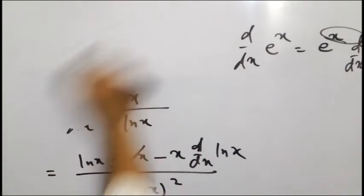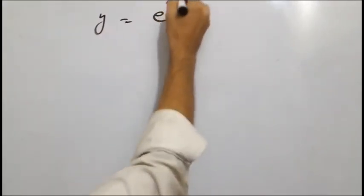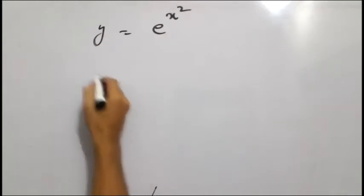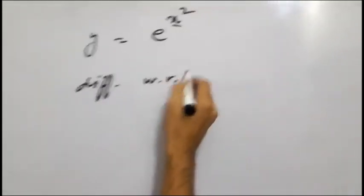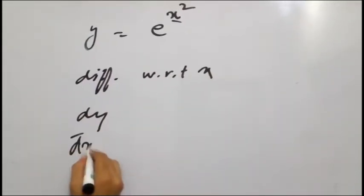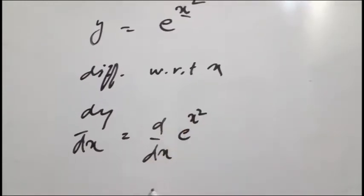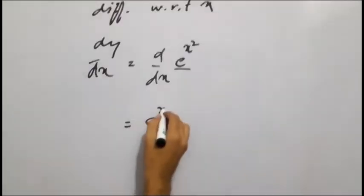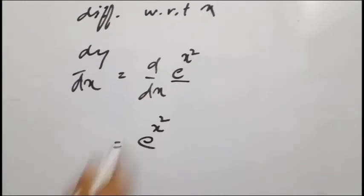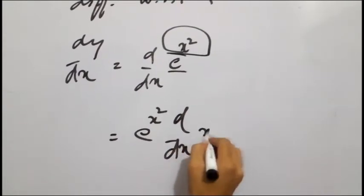हमारे पास पहला सवाल है: y is equal to e raised to power x square। इसका differentiation with respect to x करेंगे — dy over dx is equal to d over dx into e raised to power x square। exponential function का derivative वैसे ही आता है, तो e raised to power x square वैसे ही आ गया। अब exponential function को छोड़ देना है, जो इसकी power होगी — d over dx into x square — उसका दुबारा से derivative लेंगे।